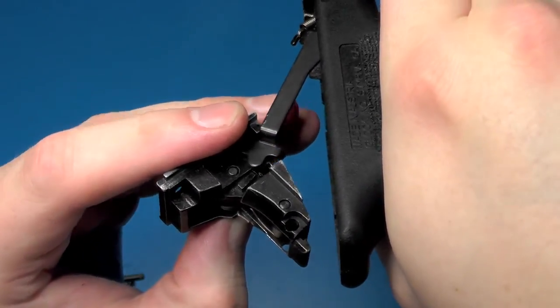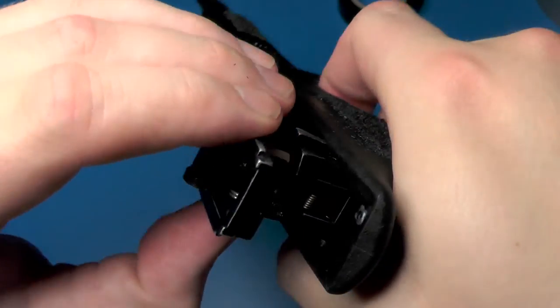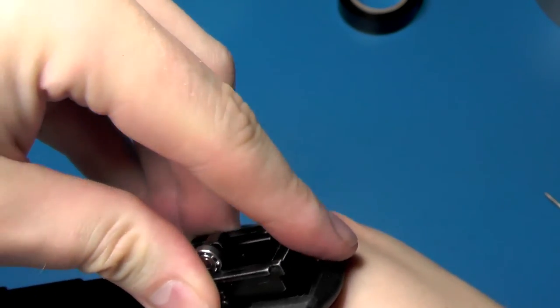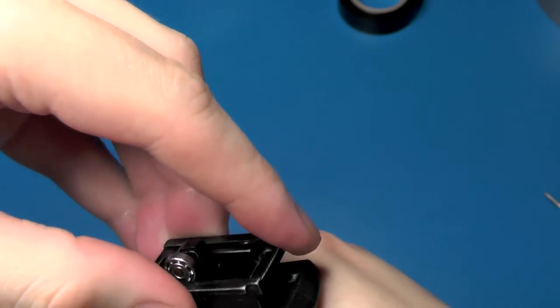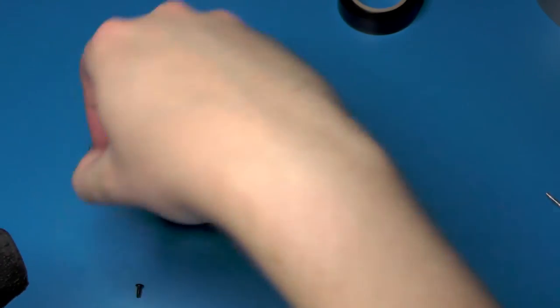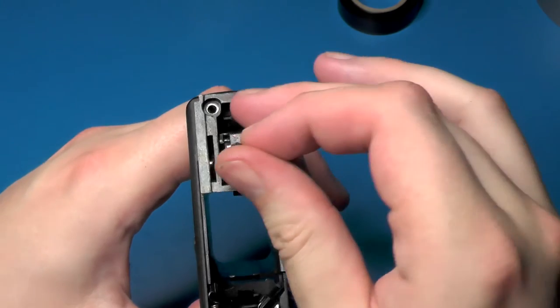Flip it over, hook the trigger bar into the housing, rotate it downwards, and set it in place in the frame. And we'll put in our hammer housing pin.